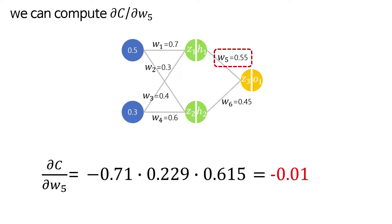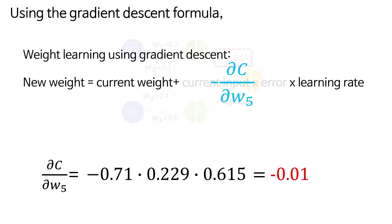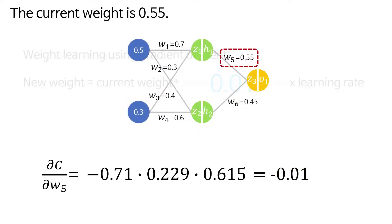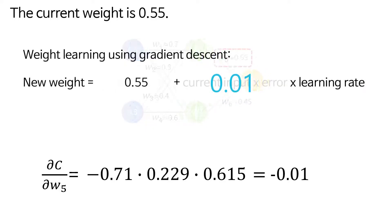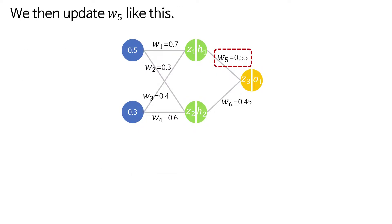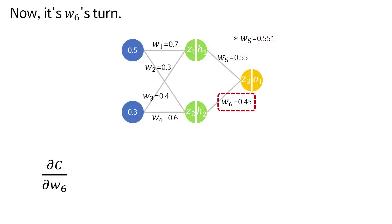From our forward propagation, h1 was 0.615. Using this value we can compute ∂c/∂w5. Using the gradient descent formula, we update the weights. We can input the gradient like this. The current weight is 0.55 with a learning rate of 0.1. The new weight becomes 0.551. We then update w5 like this. Now it's w6's turn.